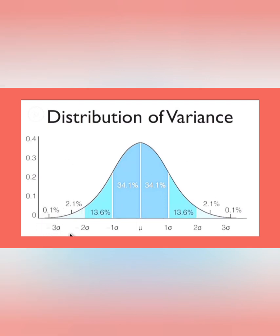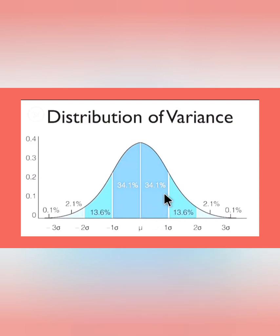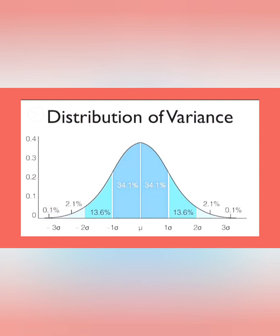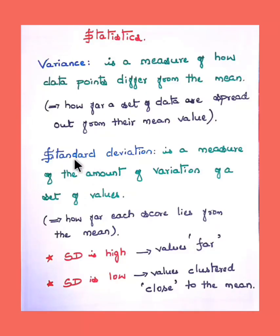As we can observe in this graph, it starts from 0 and the values go from 0 to 0.1, 0.2, and so on. The mean value is here, and the remaining distribution shows the variance — how the data is distributed from the mean value. About 34.1% is accumulated near the mean, then about 13.6%, then about 2.1%, and about 0.1%.